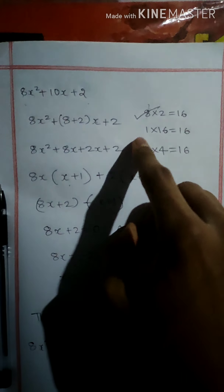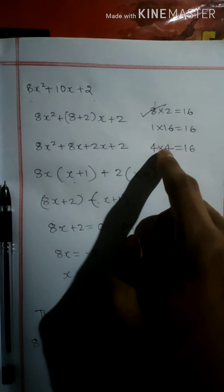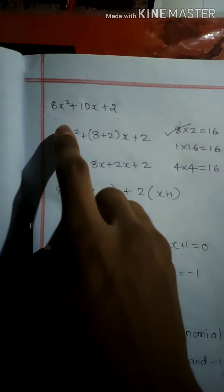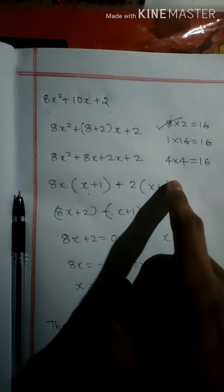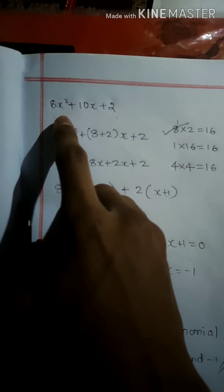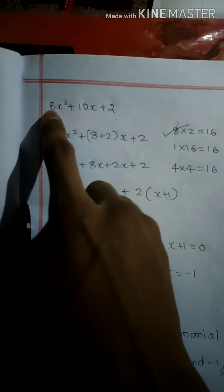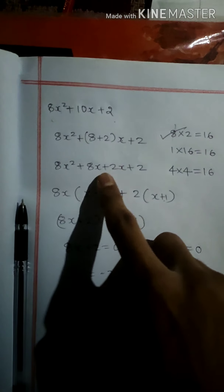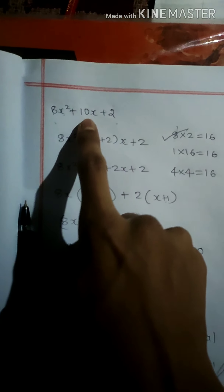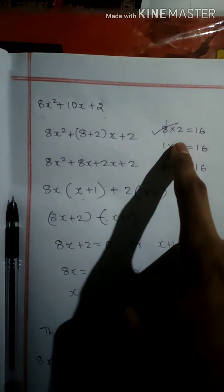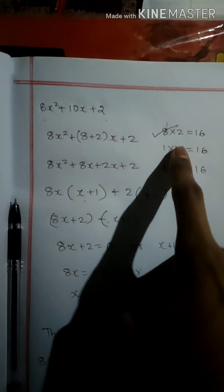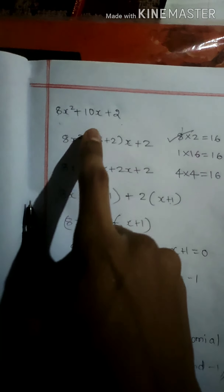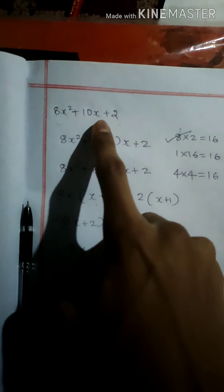Using the factorization method, the pairs for 16 are: 1 into 16 equals 16, and 4 into 4 equals 16. We need a pair whose product is 16 and whose sum is 10. That pair is 8 and 2, because 8 into 2 equals 16 and 8 plus 2 equals 10.